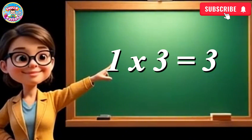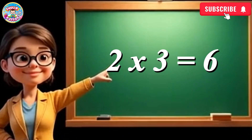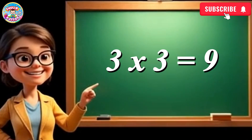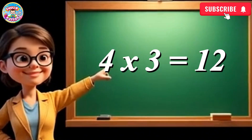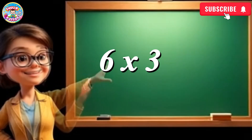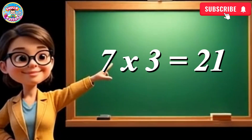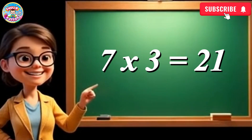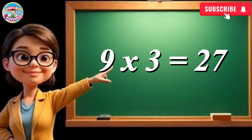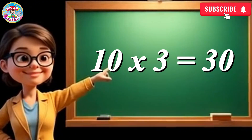1 times 3 equals 3. 2 times 3 equals 6. 3 times 3 equals 9. 4 times 3 equals 12. 5 times 3 equals 15. 6 times 3 equals 18. 7 times 3 equals 21. 8 times 3 equals 24. 9 times 3 equals 27. 10 times 3 equals 30.